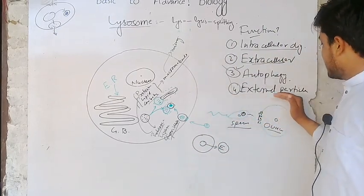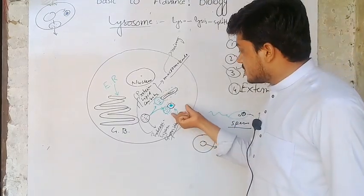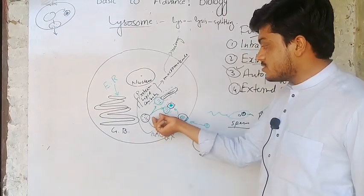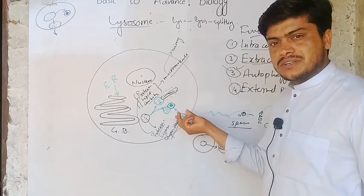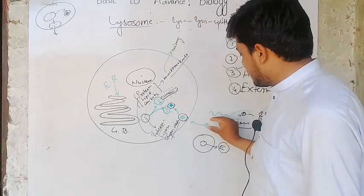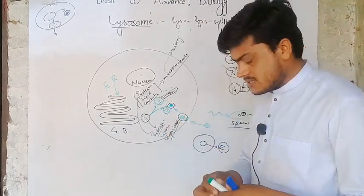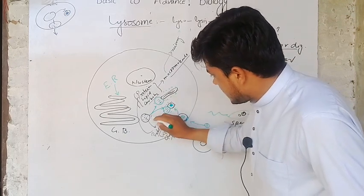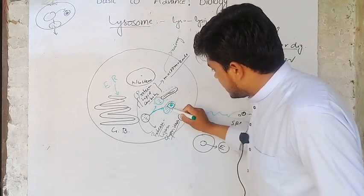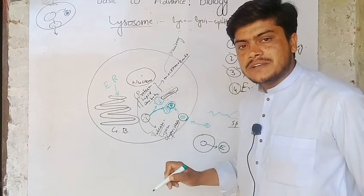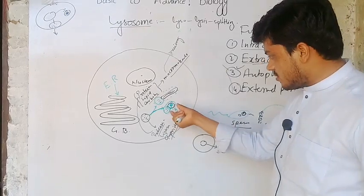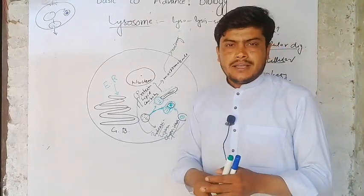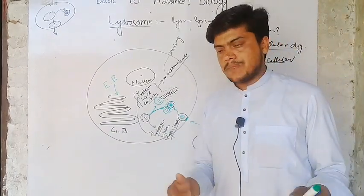Fourth one is external particles digestion. If there are external particles going inside the cell, this can cause various types of abnormalities in the cell. The lysosome dissolves such types of particles. For example, a particle coming into the cell carries the plasma membrane along with itself and is present inside the cytoplasm. The lysosome will come, fuse with these external particles, engulf them, and release its enzymes to dissolve the particle, eventually neutralizing it so it can no longer cause disease or abnormalities. This process mainly occurs in macrophages or white blood cells of the human body.